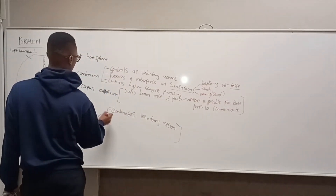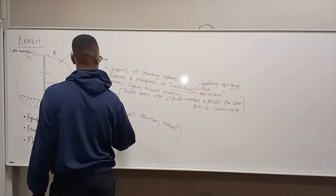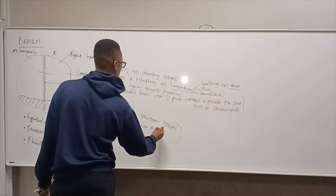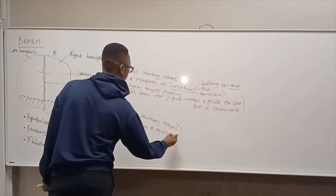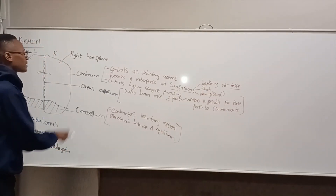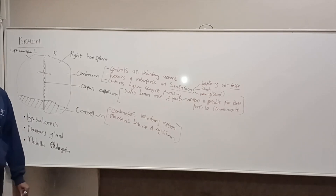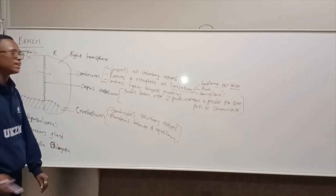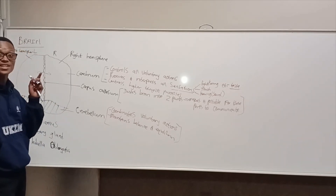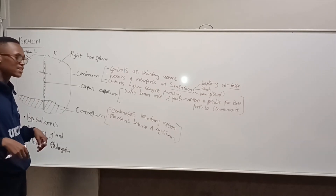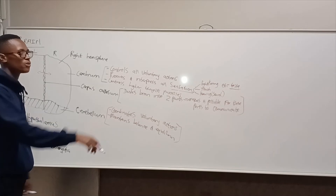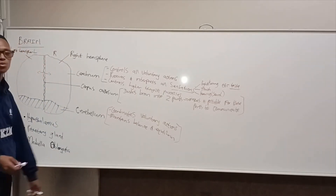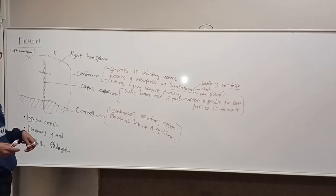Another function of the cerebellum is that it maintains balance and equilibrium. The cerebellum is responsible for making sure you do not fall when you walk. It sends impulses — messages — to the muscles of your body so that the muscles can maintain balance. If you are about to fall, the cerebellum sends impulses to the muscles to quickly restore balance.